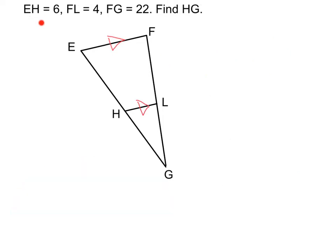All right. This time we're given EH equals 6, FL equals 4, FG equals 22, and we want to find HG. Let's label all our sides first. Notice this time they gave us an entire side, FG equal to 22. So I just made sure and labeled this entire side 22.